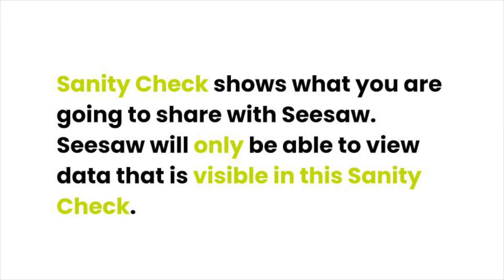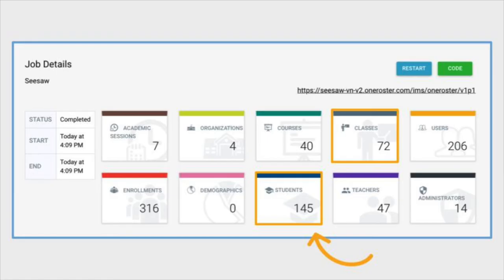Sanity Check shows what you are going to share with Seesaw. Seesaw will only be able to view data that is visible in this Sanity Check. If something is missing in Sanity Check, revise your sharing rules. To make sure everything is correct, check that the number of students matches your Seesaw for Schools subscription purchase and that only the correct classes have been shared.